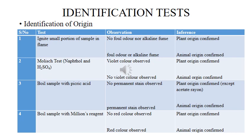The Molisch test can also be used: when carried out on the fiber, you observe a violet color if the fiber is of plant origin, but you would not observe that violet color if it is of animal origin. You could also boil the sample with picric acid — for plant origin fibers you would observe no permanent stain, though there is an exception for acetate rayon. For fibers of animal origin, you will observe a permanent stain.